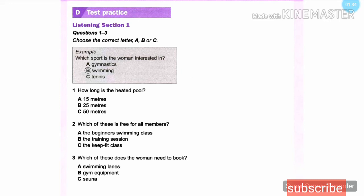And would I need to book any of the facilities, or can I just come whenever I want? We don't actually allow anyone to book the swimming lanes or the gym equipment, but for safety reasons, we can only have a maximum of seven people in the sauna at any one time, so you do need to put your name on the list for that. Fine.